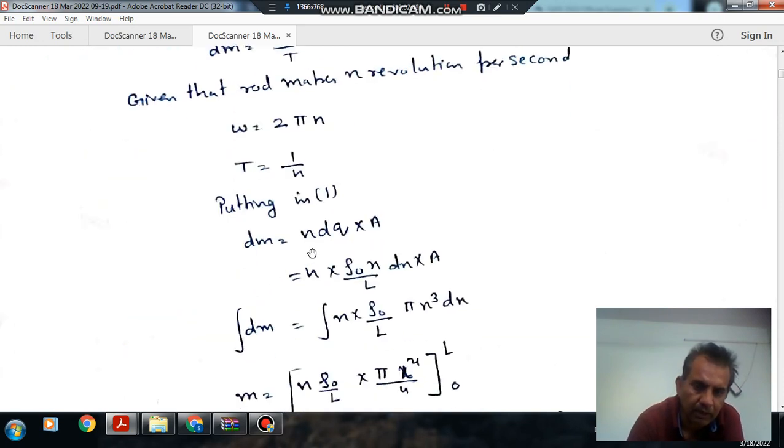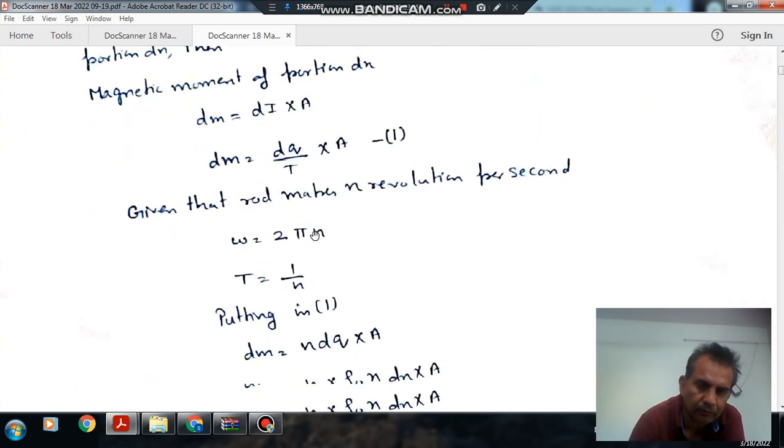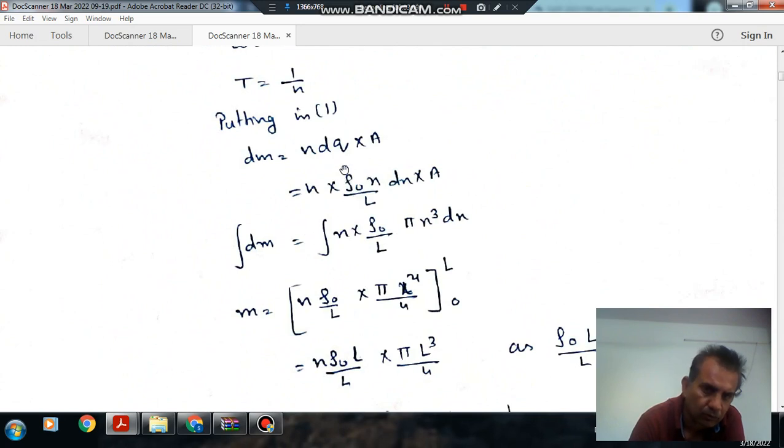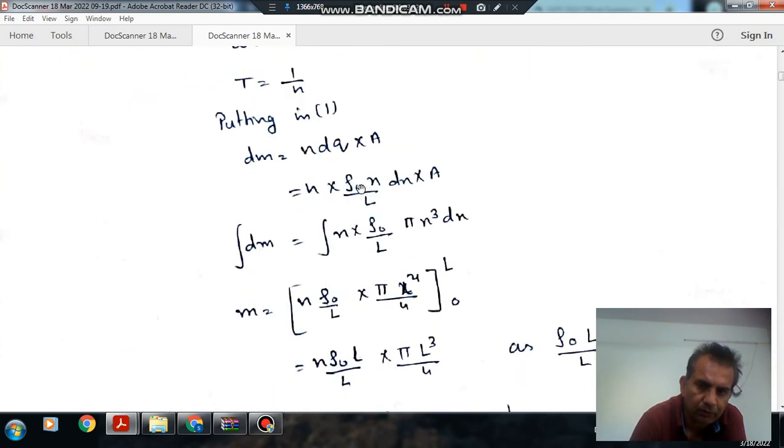So now dm becomes n·dq·A, where A is πx². And q is ρ into dx. dq will be ρ into dx. ρ is given as ρ₀x/L, so we can put dq as ρ₀(x/L)dx.